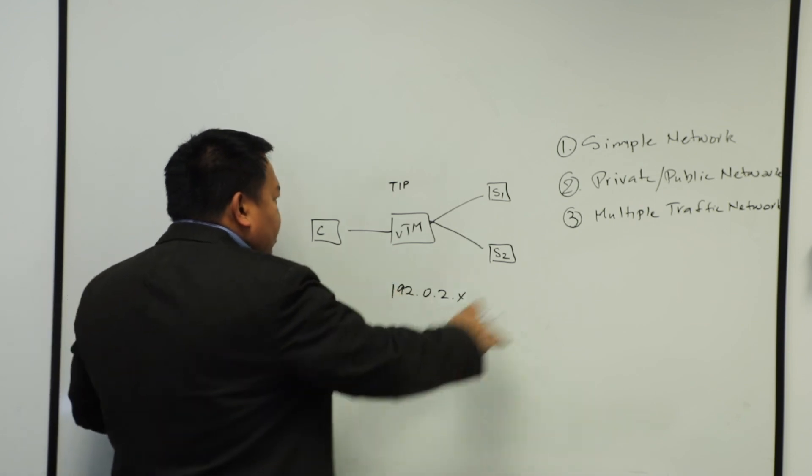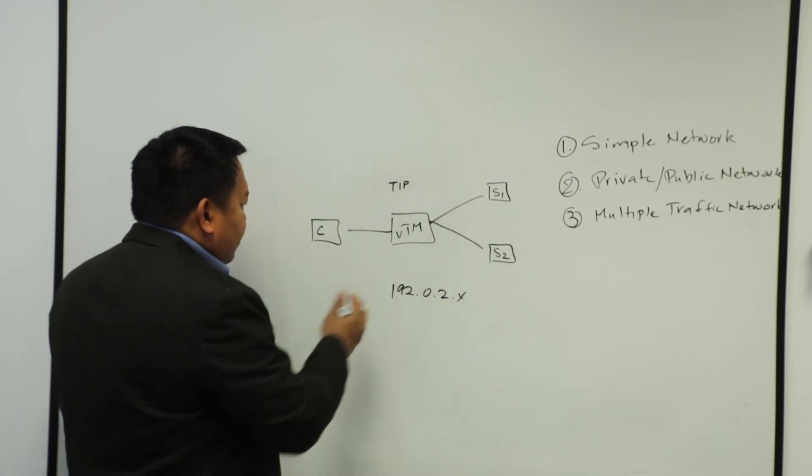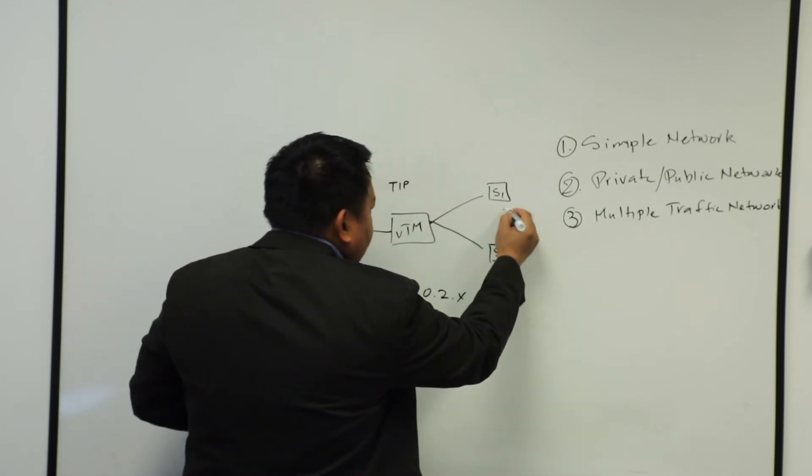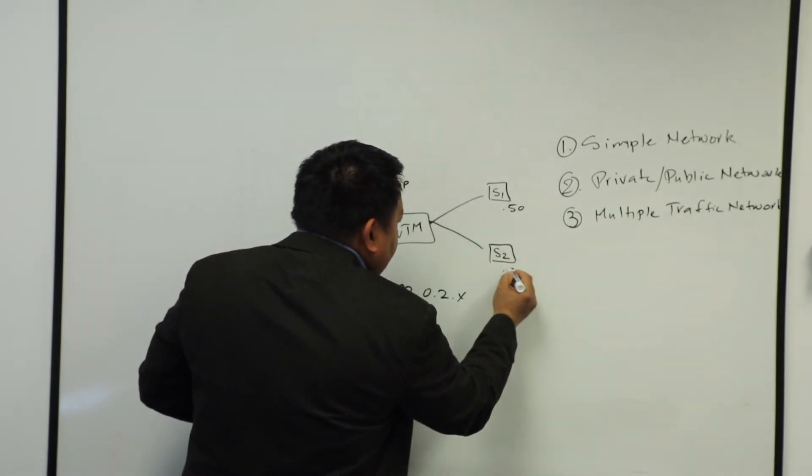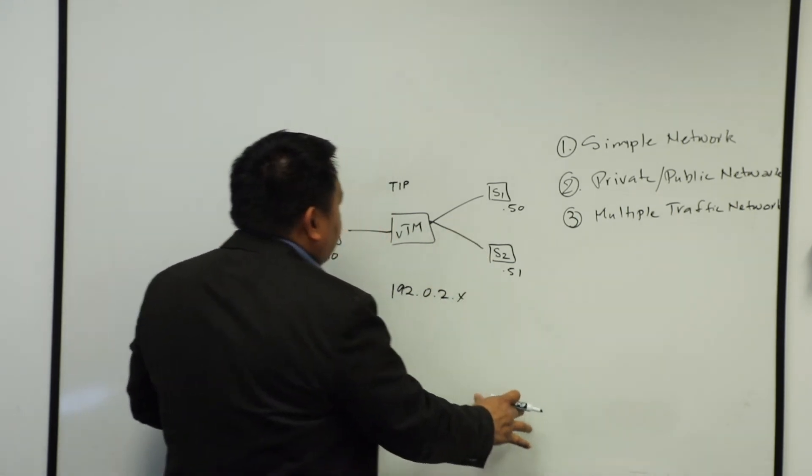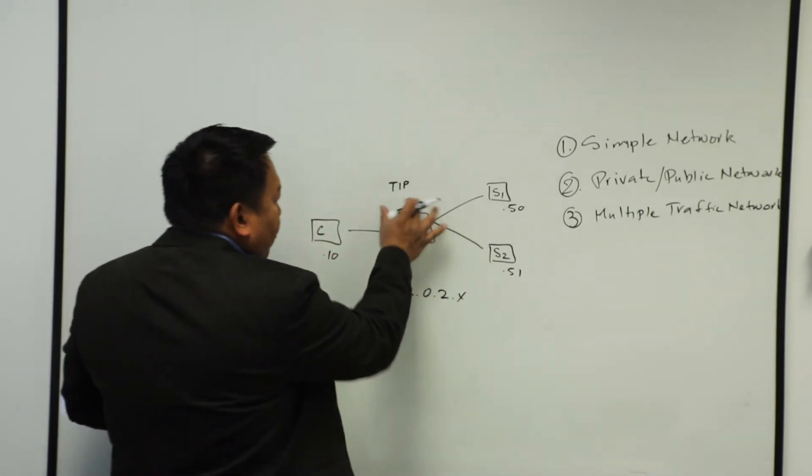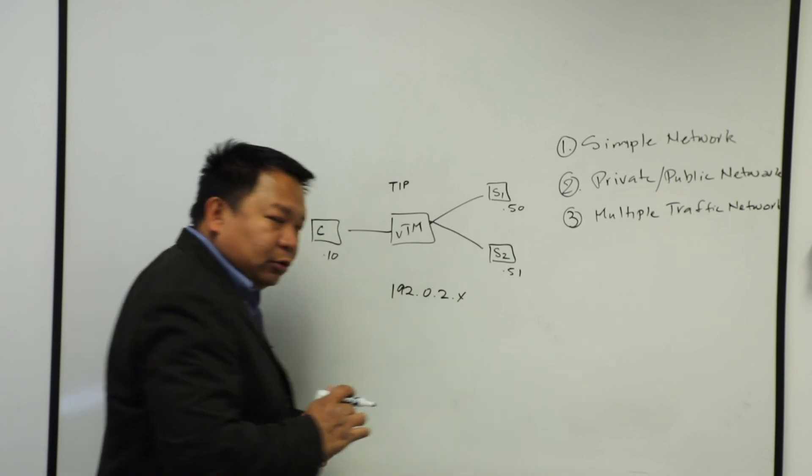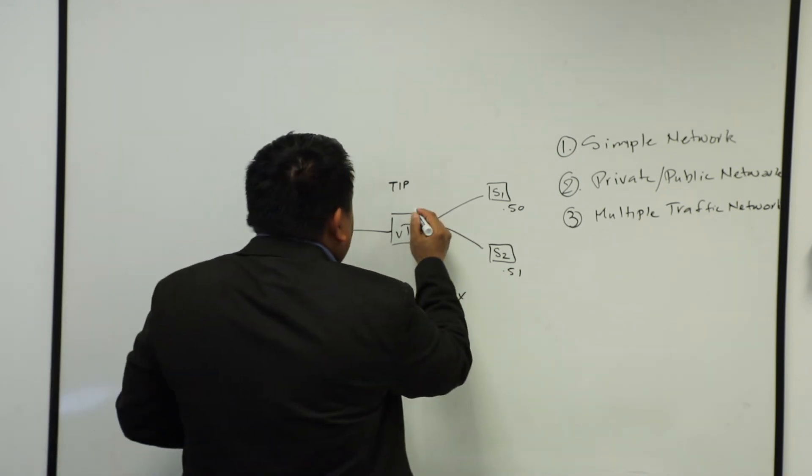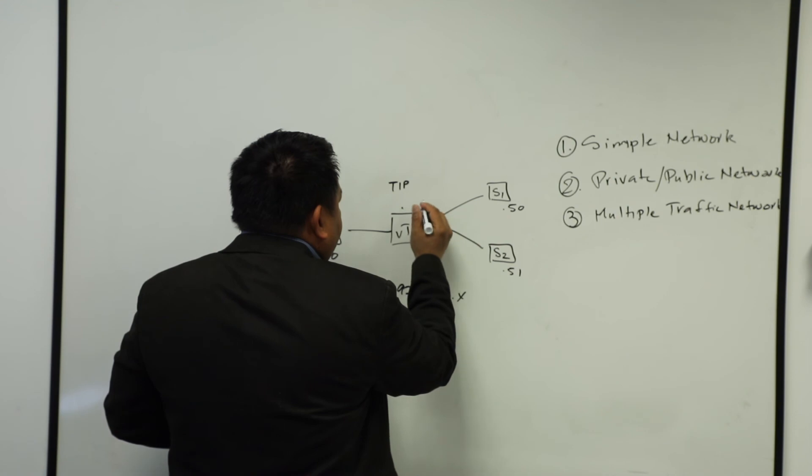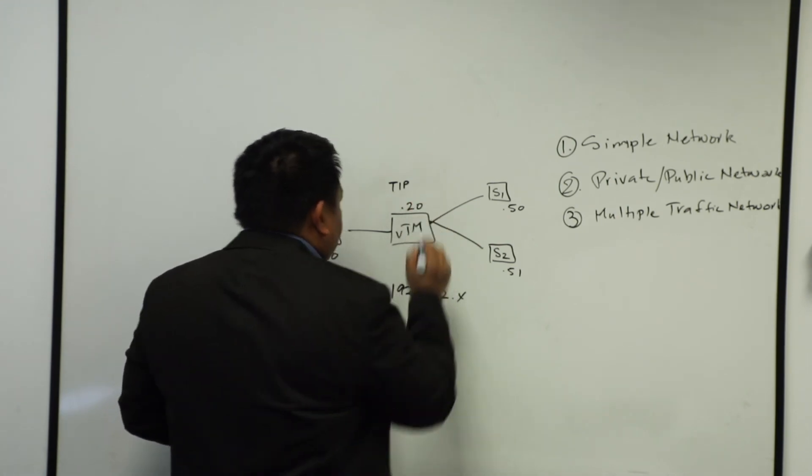So addressing these things. So if my client is all in the same address space, I would just assign this to the .10. On my servers, probably .50, .51. And if I have more, I can just add in 5253. And then for the tip, which is also what they call it a virtual IP in the other SLBs or ADC world, I'm going to address this as .20.